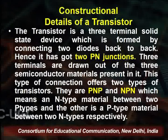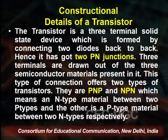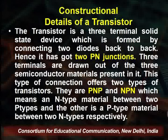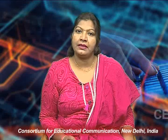The transistor is a three-terminal solid-state device formed by connecting two diodes back to back. It has two PN junctions — in a diode there is a single PN junction, but in a transistor there are two. Three terminals are drawn from the three semiconductor materials, where one is sandwiched between the two others: N-type between two P-types, or P-type between two N-types. The three terminals drawn from the transistor are the emitter, base, and collector, each having its specific functionality.